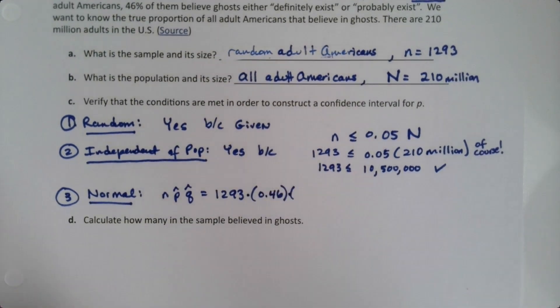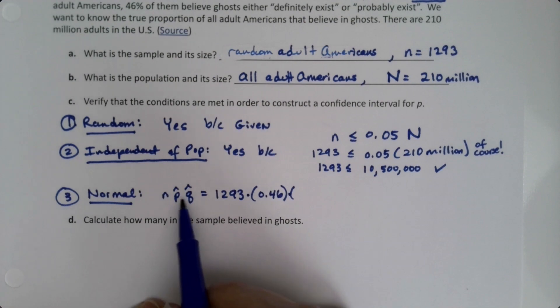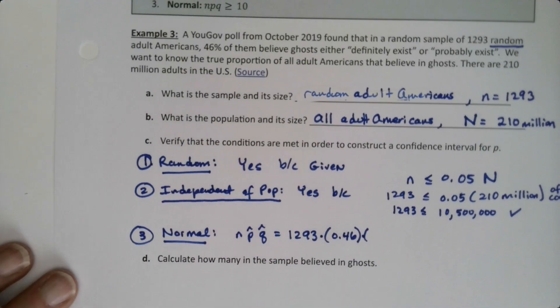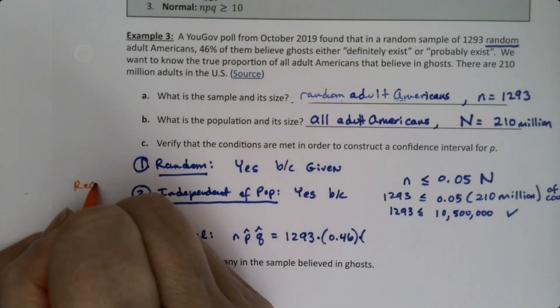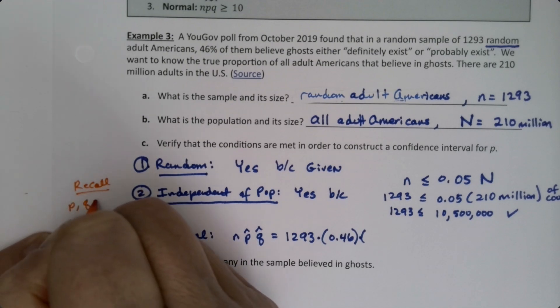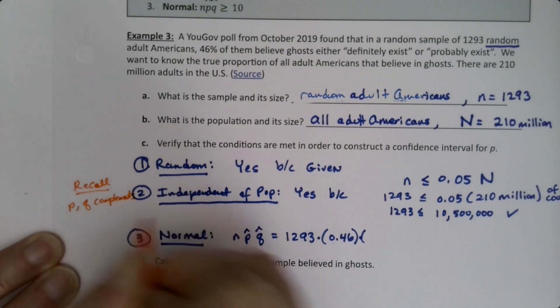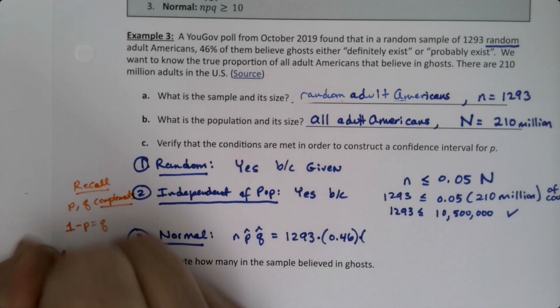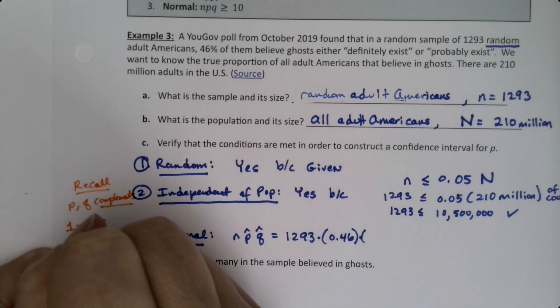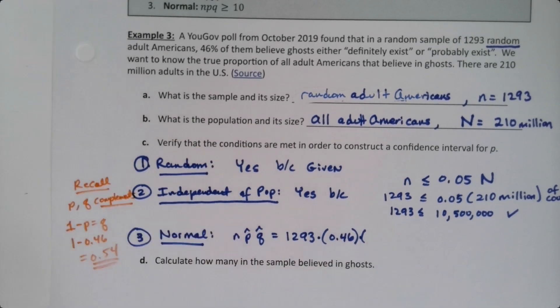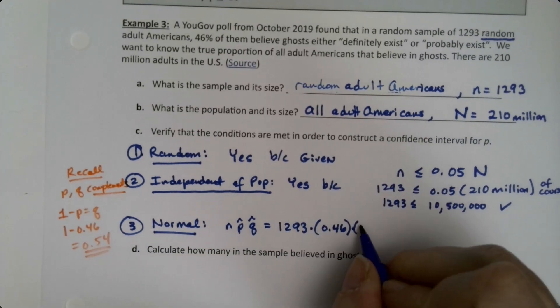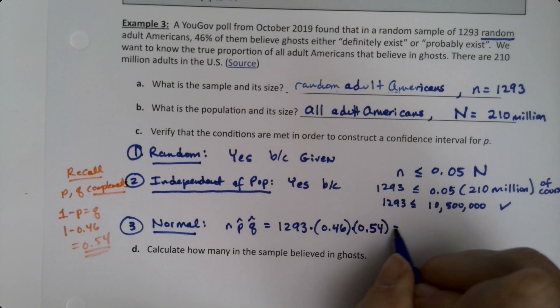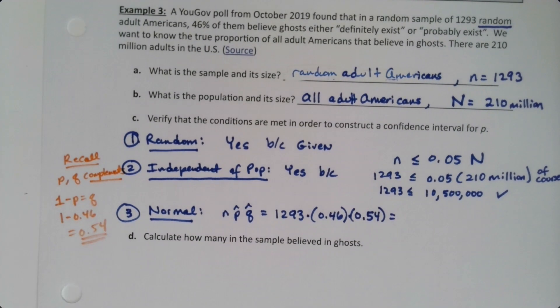So that's 0.46. I'll use parentheses for clarity—it's multiplication. Then you multiply by Q. Remember, P and Q are complements, so 1 minus P equals Q. So 1 minus 0.46 is 0.54.